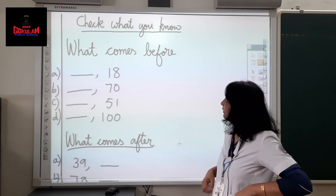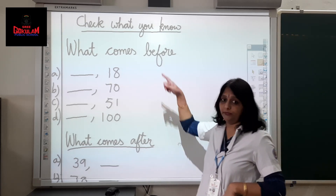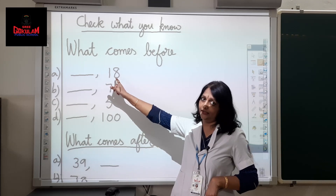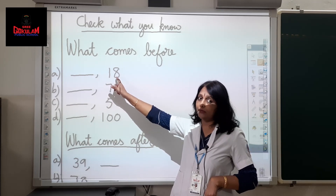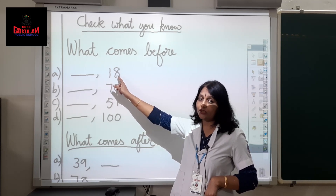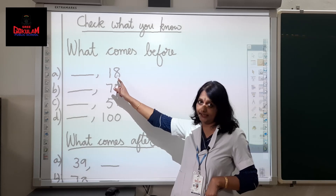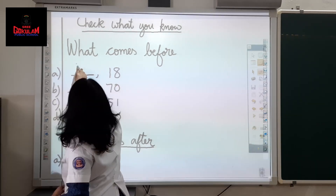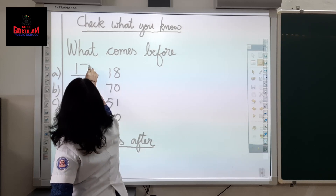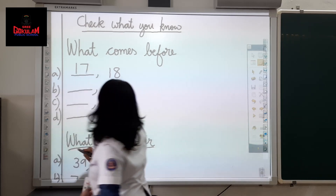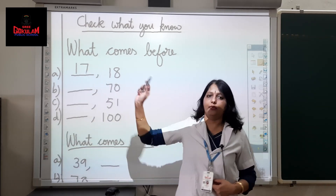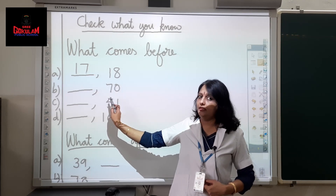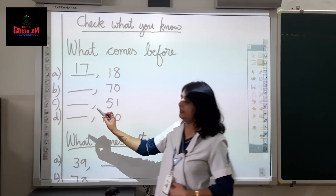Now, what comes before? What is this number? 18. What comes before 18? Which number comes before 18? Yes, it is 17. Next one: which number comes before 70? 69.